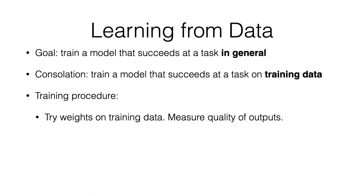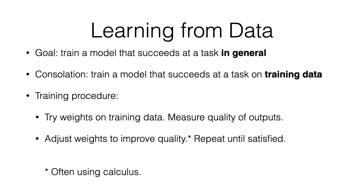The training procedure is: we take the weights from the linear model, try them on the training data, and measure the quality of the outputs. There are lots of ways to measure quality. Once you measure it, you adjust the weights to improve that quality, and you repeat this until you're satisfied. The way you adjust the weights is often using calculus — specifically derivatives, which tell us how functions change.